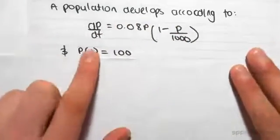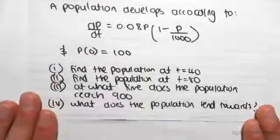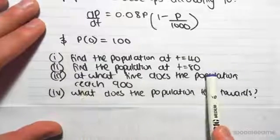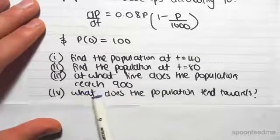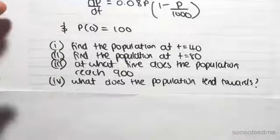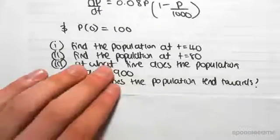We're also given p(0) equals 100. And the question asks us to find the population at time equals 40, the population at time equals 80, at what time does the population reach 900, and what does the population tend towards. So what's the maximum population we can have based on this model?